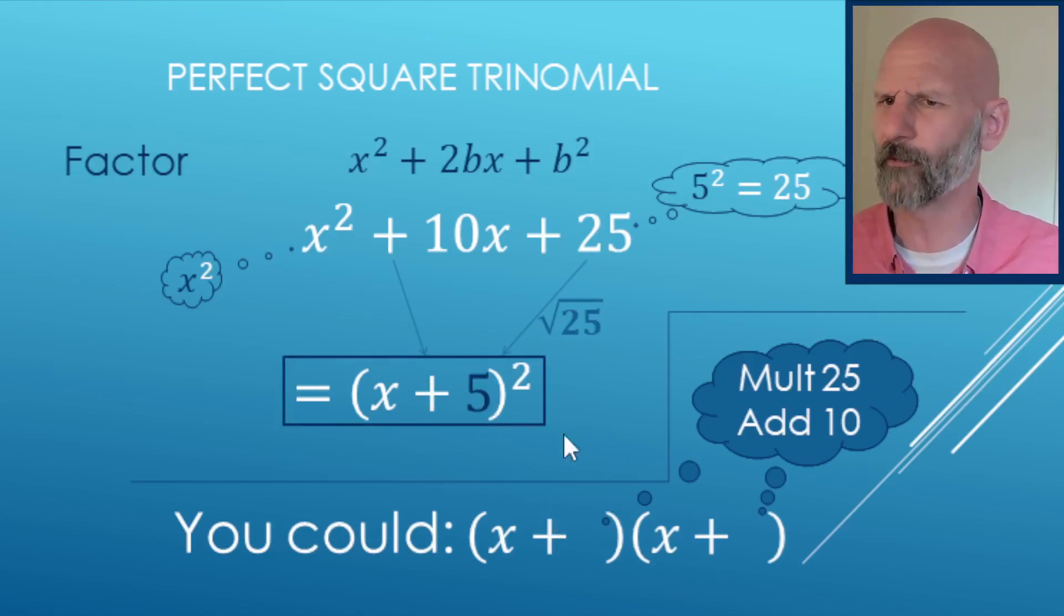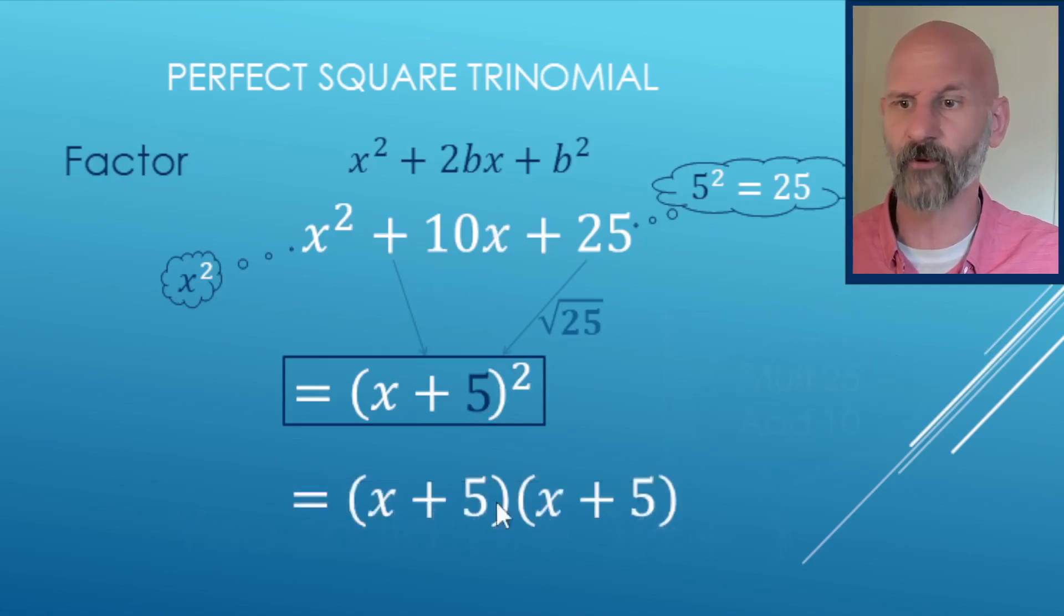Now, why does this work? Because some people are freaked out because it's an x squared and a 5 squared. Well, where does that 10 come from? Well, remember, if you were to FOIL this out, this 2 means you have 2 x plus 5s being multiplied. So your outers is 5x and the inners is 5x. 5x and 5x, you have two 5x's added up, make 10x there.